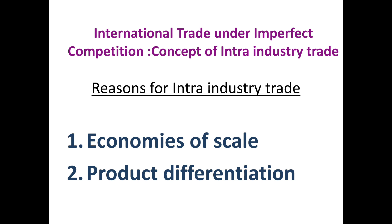Now, if the countries have similar factor endowment, then intra-industry trade will dominate, while if countries have entirely different kinds of factor endowment, inter-industry trade will dominate. Further, the H-O model is based on differences in factor endowment, while intra-industry trade is based on product differentiation and economies of scale. Both are features of imperfect competition.